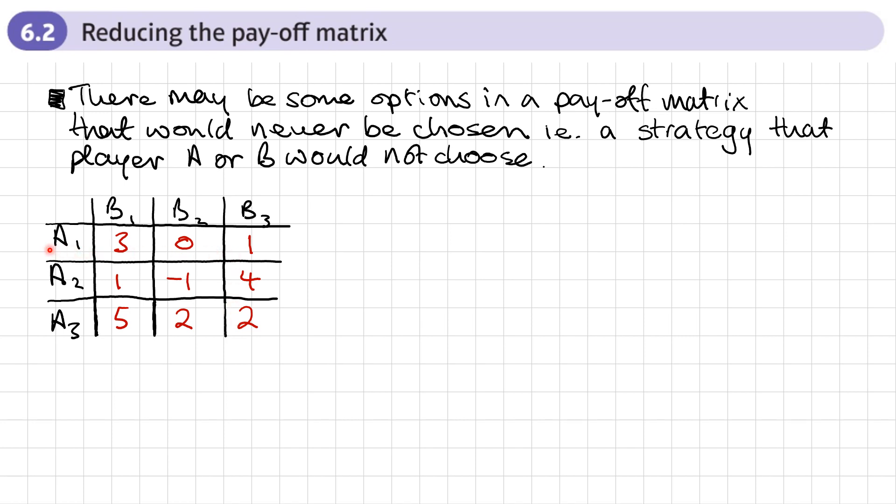So A has no incentive to play 1 over 3. 3 is always going to be a better option regardless of what B does. In this case we say that row 3 dominates row 1 because every element is greater than every element in that row. So row 3 dominates row 1.